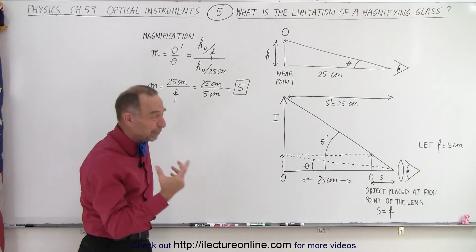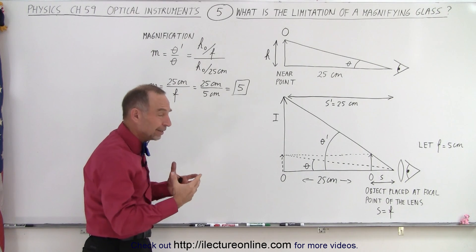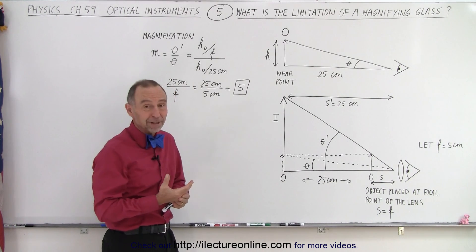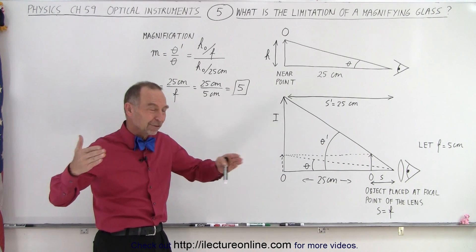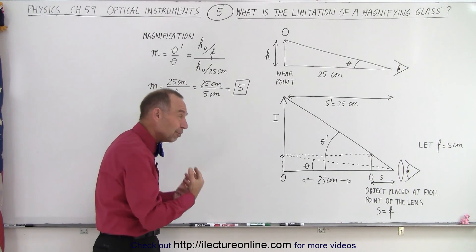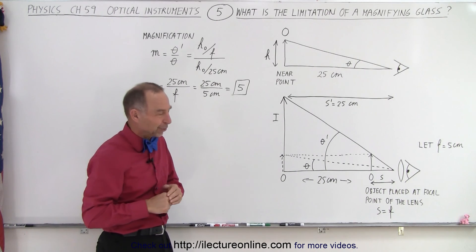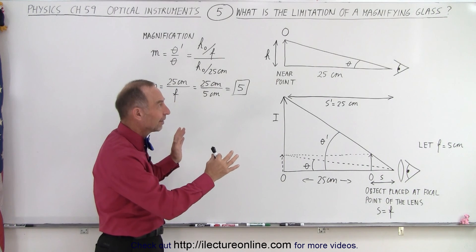So we need something else, something that can even magnify things better than a magnifying glass. So if one magnifying glass is good, let's put two of them together in a particular arrangement, such that you can see things even smaller than that. And that arrangement will be a microscope. We'll get to that in just a few videos. But at least now you understand why a magnifying glass does have that limitation.